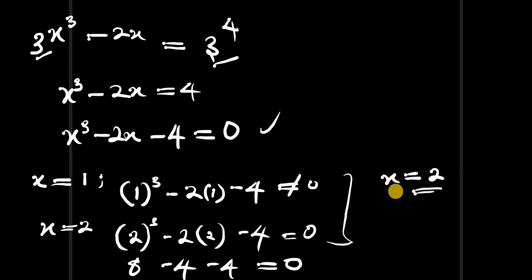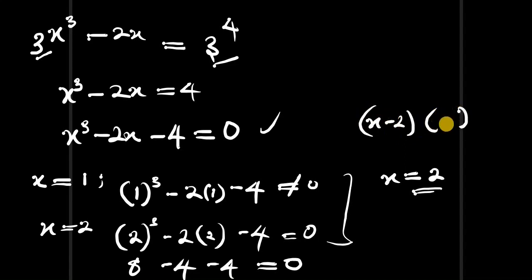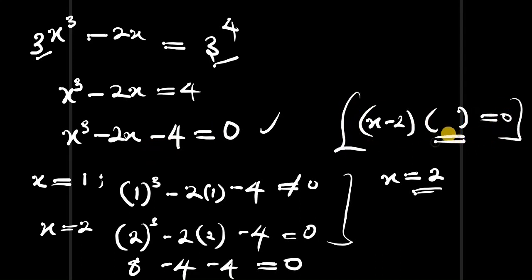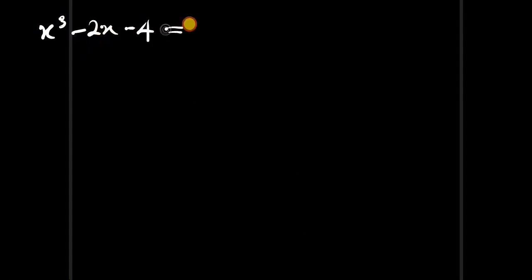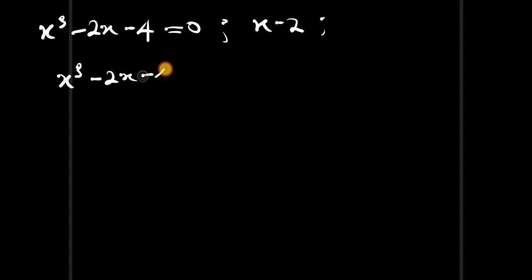Since x equals 2 is a solution, x minus 2 is one of the factors. So we can write the equation as x minus 2 times another factor equals 0. To find the other factors, we are going to divide x cubed minus 2x minus 4 by x minus 2.